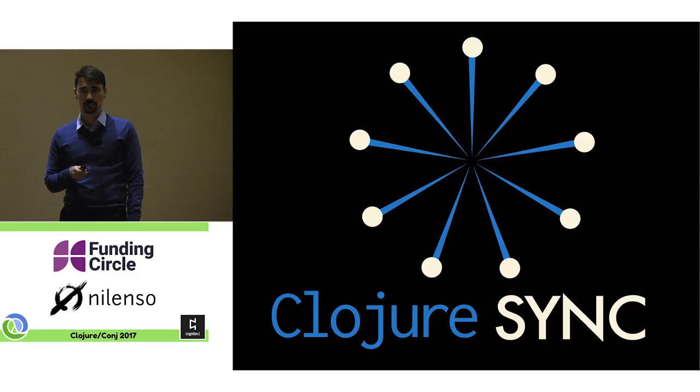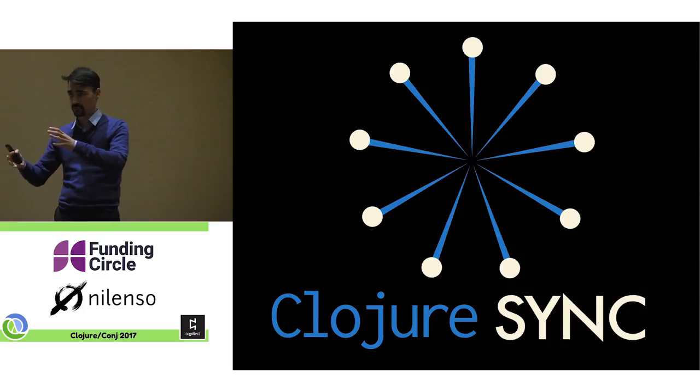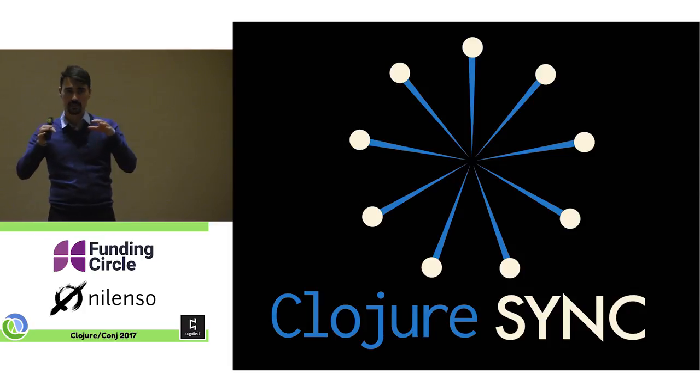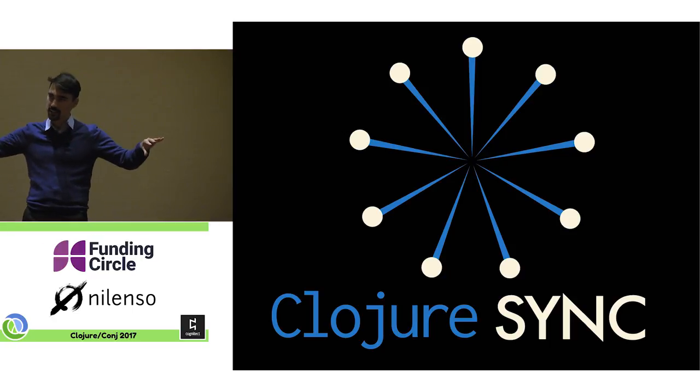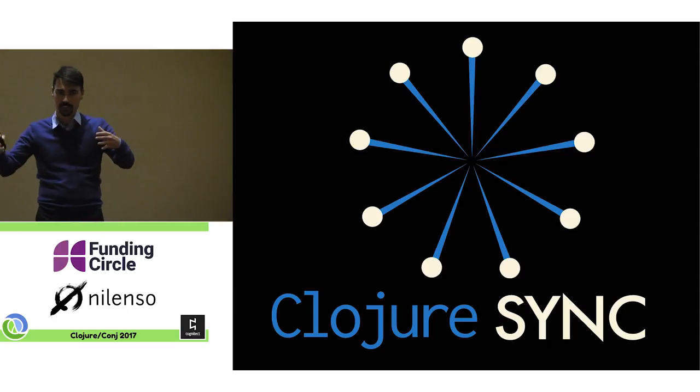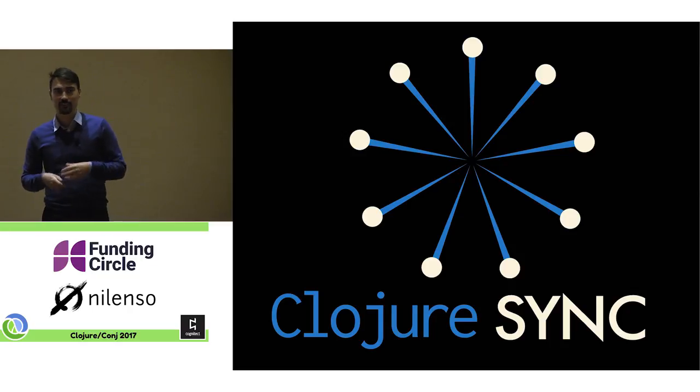You all know Strangeloop. If Strangeloop is about the confluence of industry and academia, Clojure Sync is about software and its place in the history of humanity. And I feel like the Clojure community, through the lens of Clojure, is a really cool community to talk about this stuff in. We are obviously philosophical programmers.